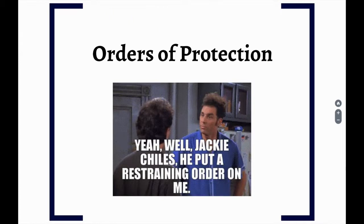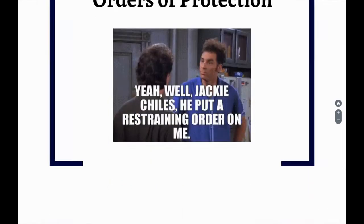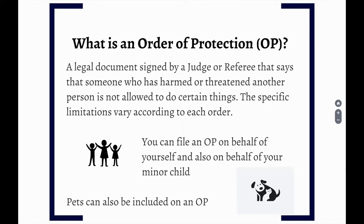Now we can talk about orders of protection. What is an order of protection? An order of protection may sometimes be referred to as a restraining order. It is a legal document signed by a judge or referee that says that someone who has harmed or threatened another person is not allowed to do certain things as a result. The specific limitations vary based on the circumstances. You can file an order of protection on behalf of yourself or on behalf of your minor child. You can also include pets on an order of protection.